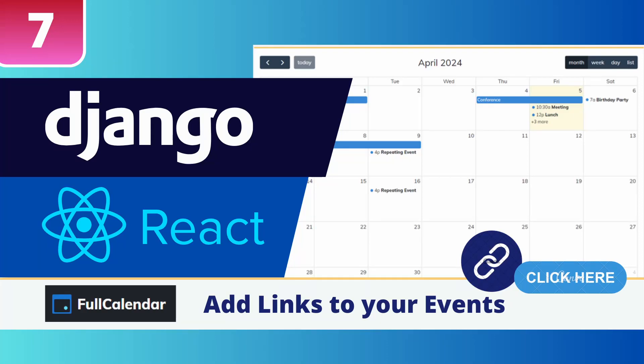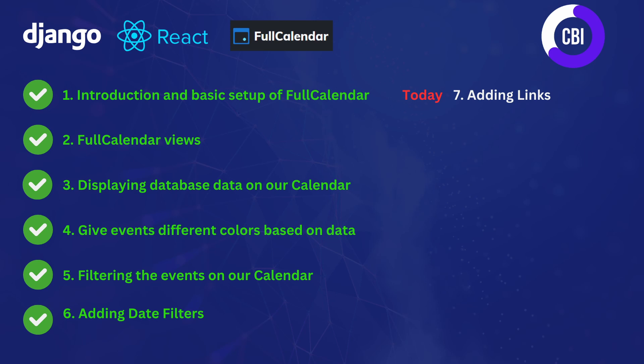Hi everyone and welcome to a new video on the CBI channel. In this tutorial series we're creating a calendar inside of our Django and React application. This is not the first video in this series — we've already covered an introduction and basic setup, explored different views, displayed database data on our calendar, given events different colors based on data, and filtered events with multi-select and date filters.